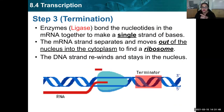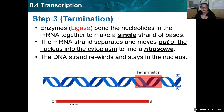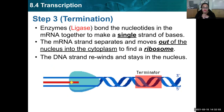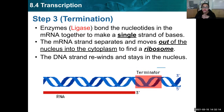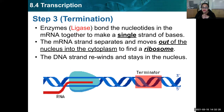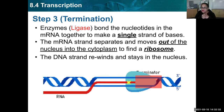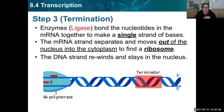Step three is called termination — to terminate something means to stop. Enzymes like ligase bond the nucleotides and the mRNA together to make a single strand of bases. That red strand you can see in the picture is the RNA. The mRNA strand separates, moves out of the nucleus into the cytoplasm to find a ribosome to start translation. The DNA strand just rewinds and stays in the nucleus. You can see in that GIF the RNA strand being made and the DNA strand winding back when it's no longer needed. It comes to a special terminator sequence where everything stops, the RNA separates, and moves along.